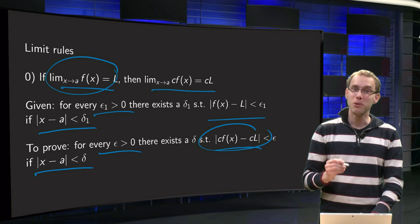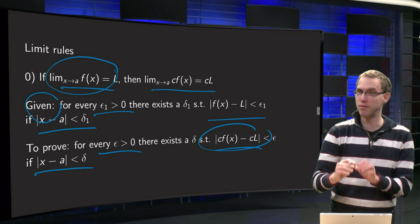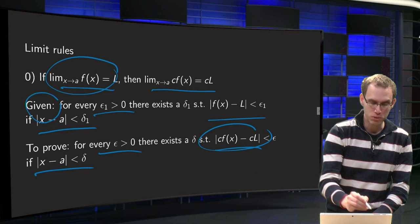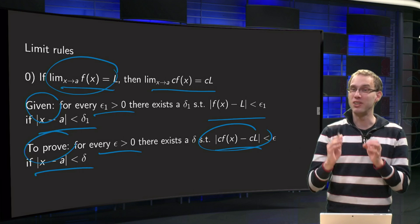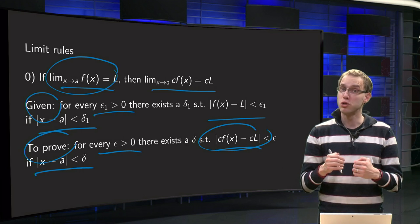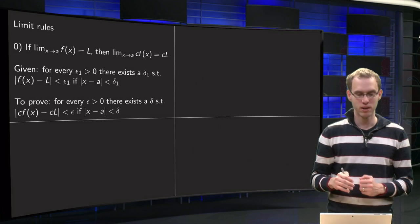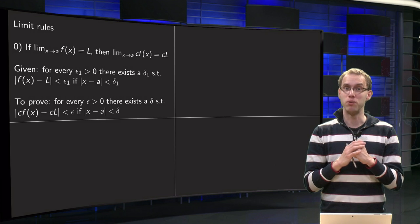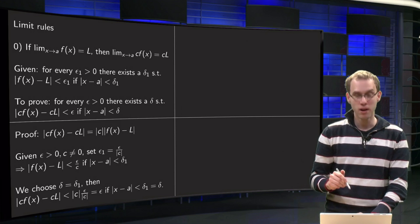Look at the general structure. First you always put what is given, and then it is good to put what you actually need to prove. That is usually a good start for any proof. So how are we going to prove this? We use the following trick.